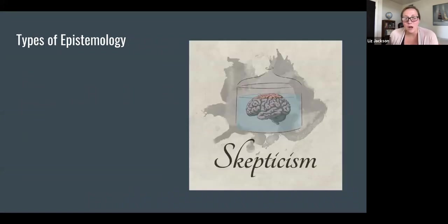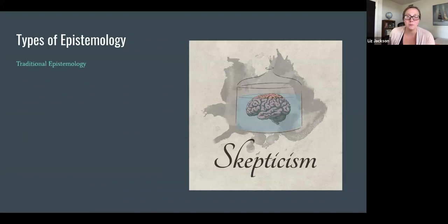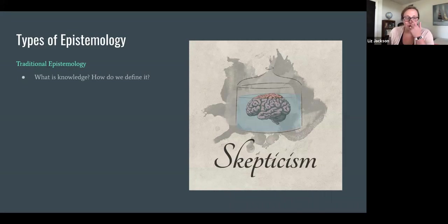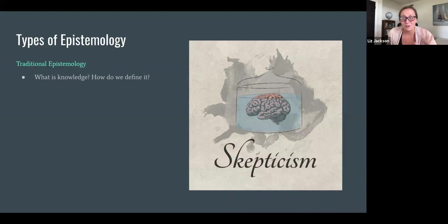Now I want to talk about the different types of epistemology. The first main branch is what you might call traditional epistemology. Traditional epistemology concerns what we'll be talking about in this video. We're going to start, but not finish, defining knowledge. So it concerns the question: what is knowledge and how do we define it?